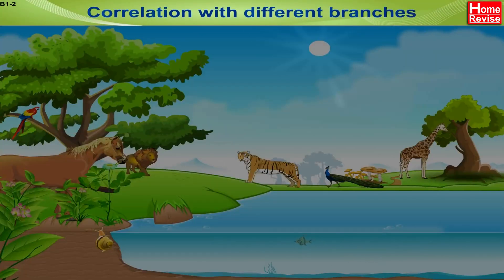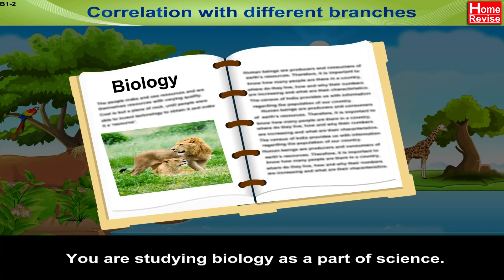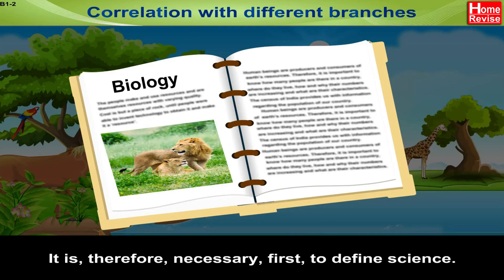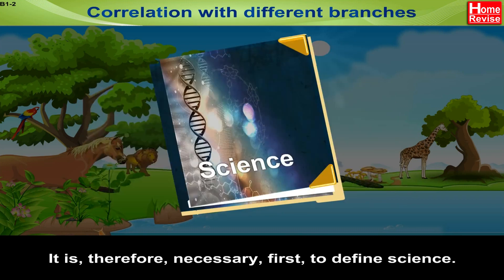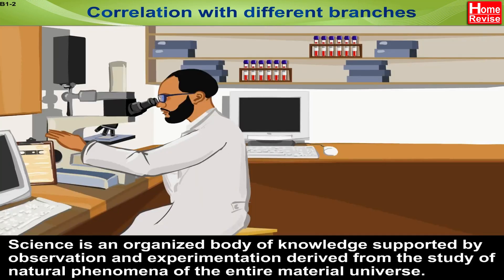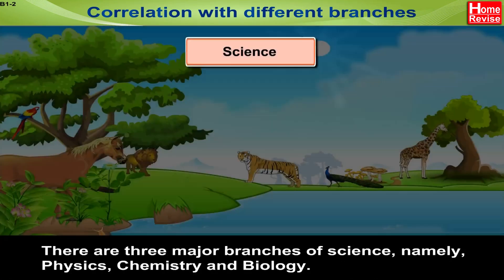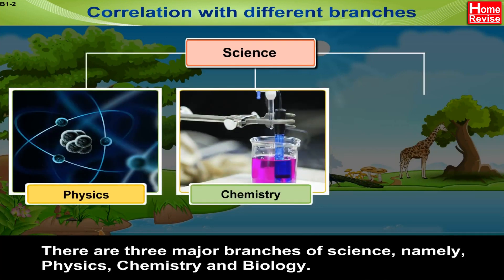Correlation with different branches. You are studying Biology as a part of science. It is therefore necessary first to define science. Science is an organized body of knowledge supported by observation and experimentation derived from the study of natural phenomena of the entire material universe. There are three main branches of science, namely Physics, Chemistry, and Biology.